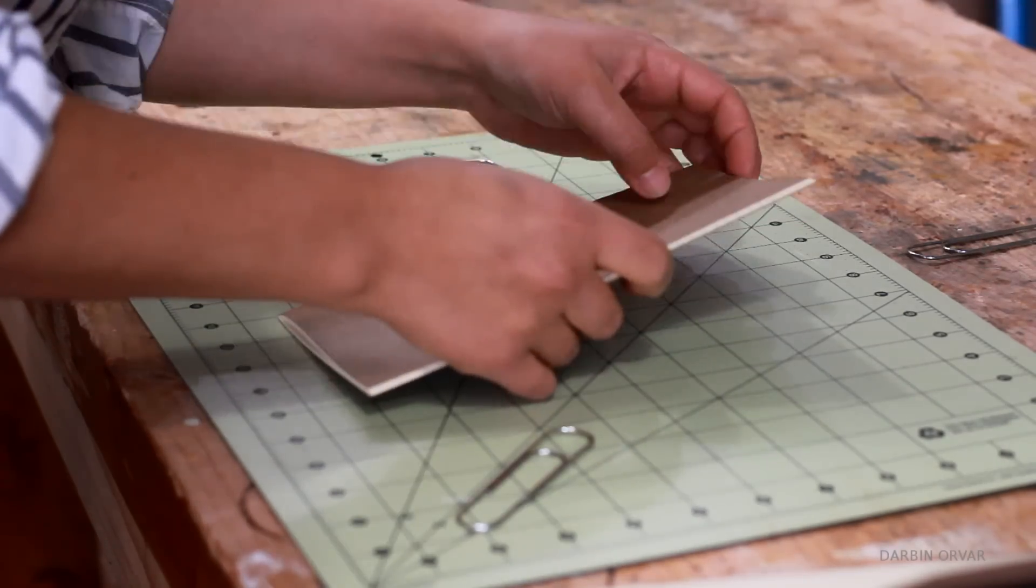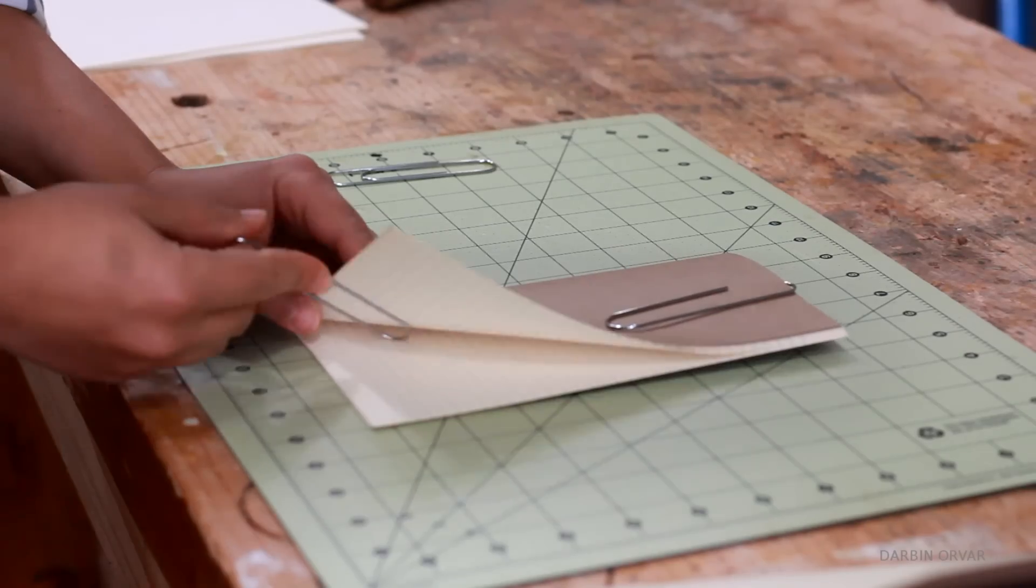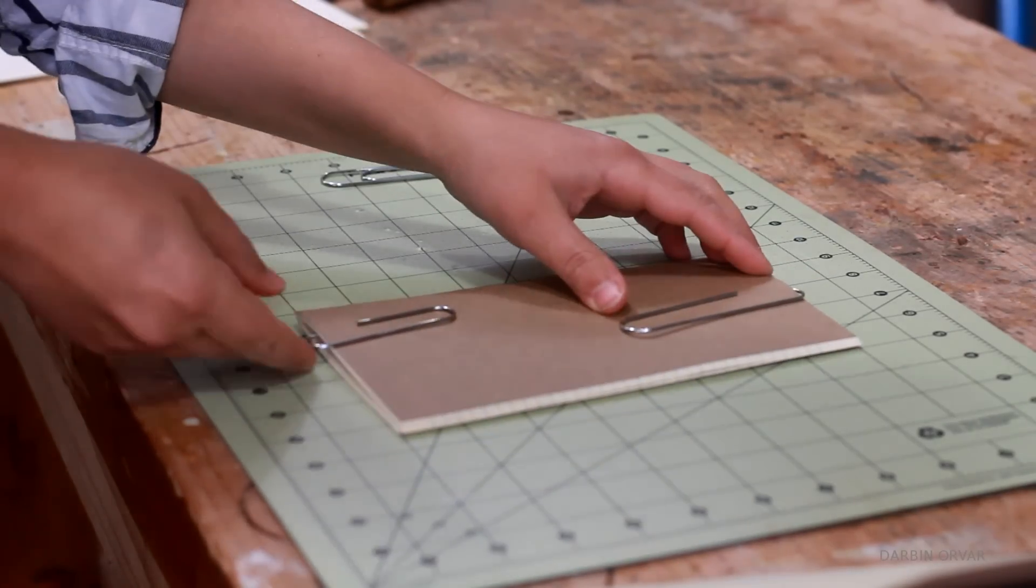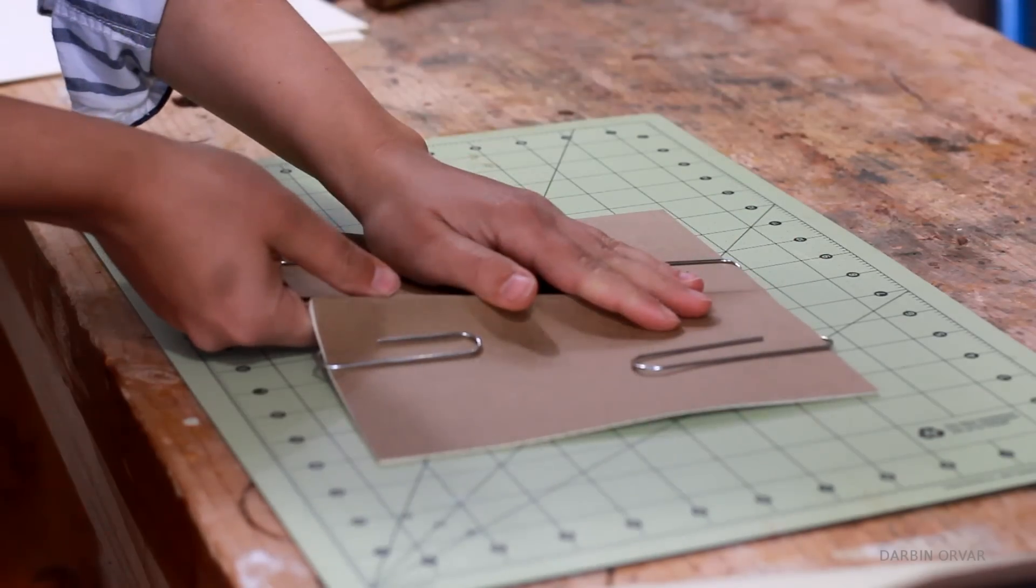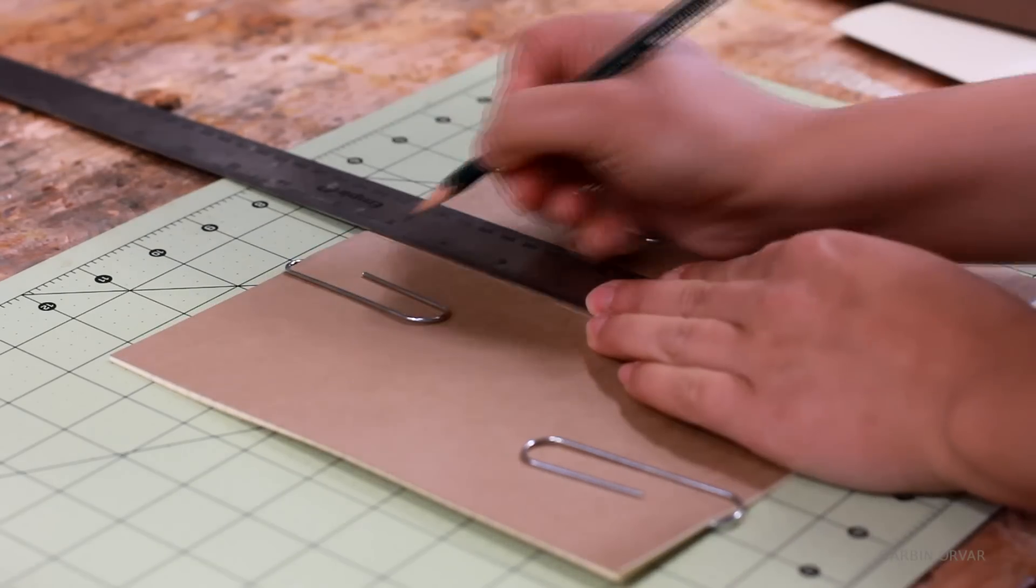Once everything is cut, insert paper and hardstock, it's time to bind. And I'm using 12 sheets for my notebooks, but of course you can change that depending on how thick you want yours.